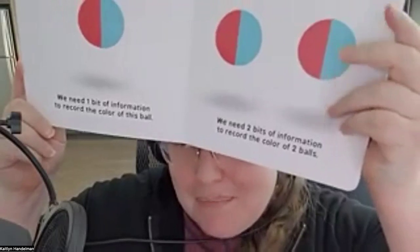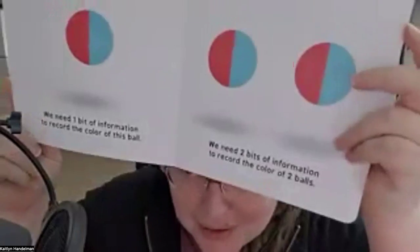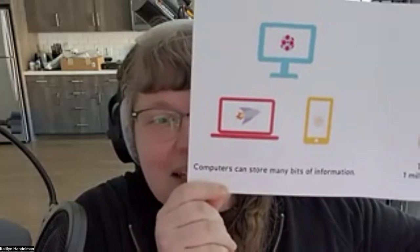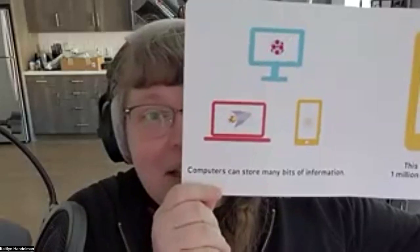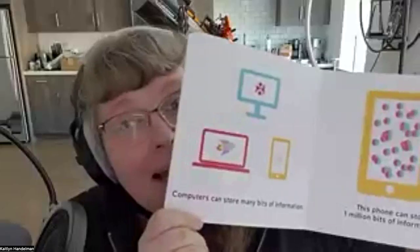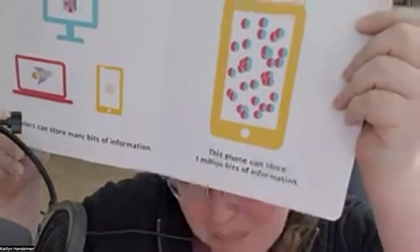We need two bits of information to record the color of two balls. Computers can store many bits of information. This phone can store one million bits of information, which is actually a very tame amount for phones.